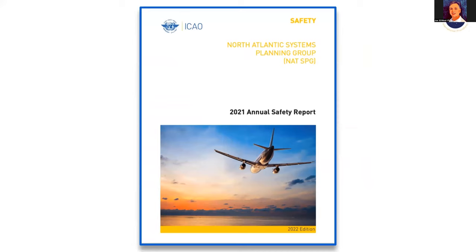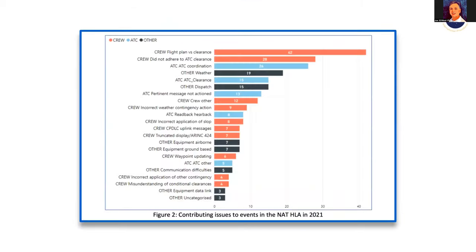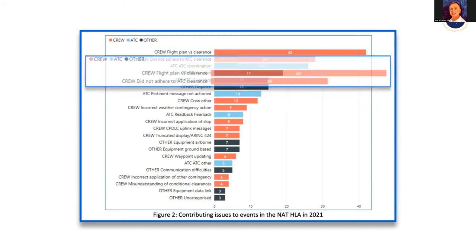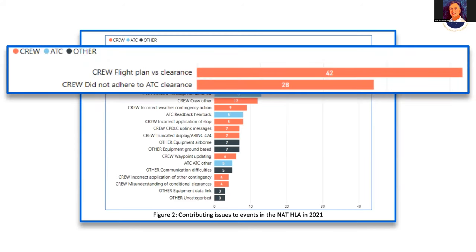Each year the North Atlantic Systems Planning Group tasks the North Atlantic Scrutiny Group to analyze errors in the North Atlantic — one of the most accurate data sets available. Here is the 2022 edition looking at 2021 issues. We see a list of errors used to categorize loss of separation and safety compromise in the North Atlantic. Two stand out at the top: 'crew flight plan versus clearance' and 'crew did not adhere to clearance' — both have in their very title a reference to the clearance.